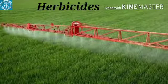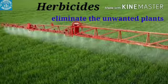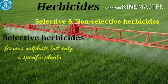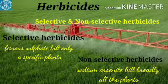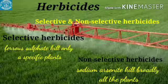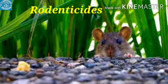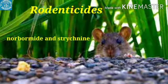Herbicides are chemicals used to eliminate unwanted plants. There are selective and non-selective herbicides. Selective herbicides, like ferrous sulfate, are used to kill only specific plants, while non-selective herbicides like sodium arsenate kill all plants broadly. Generally herbicides have very little toxicity to mammals, but some are quite harmful even to humans. Rodenticides are chemicals used to kill rodents like rats and mice; some widely used rodenticides are norbormide and strychnine.